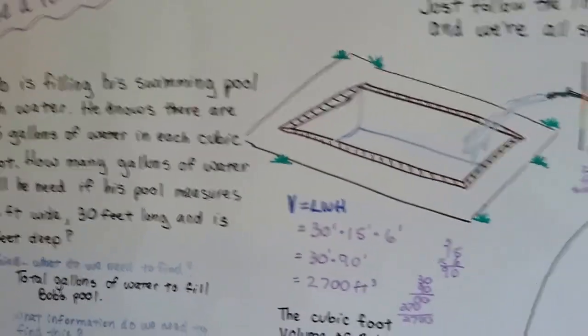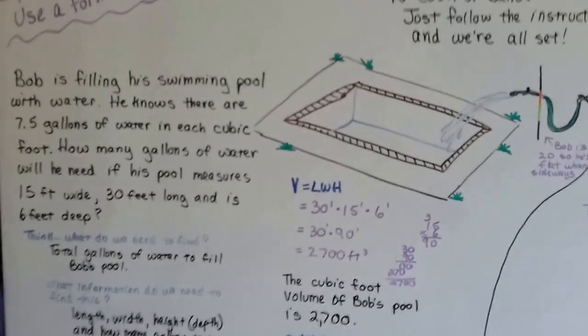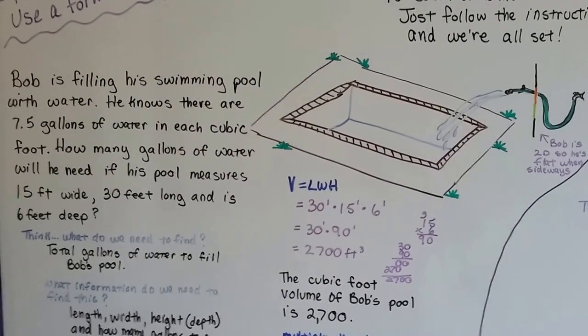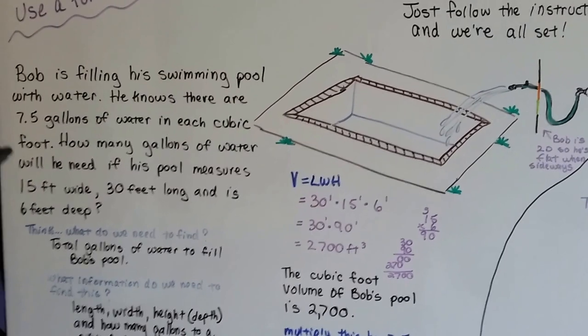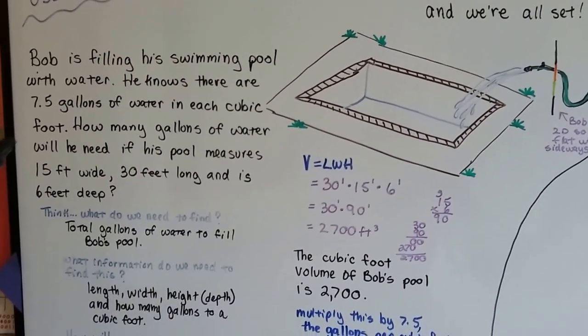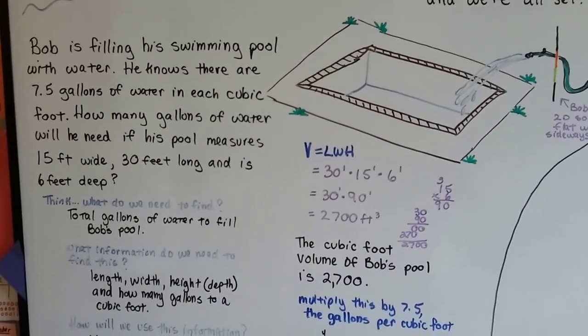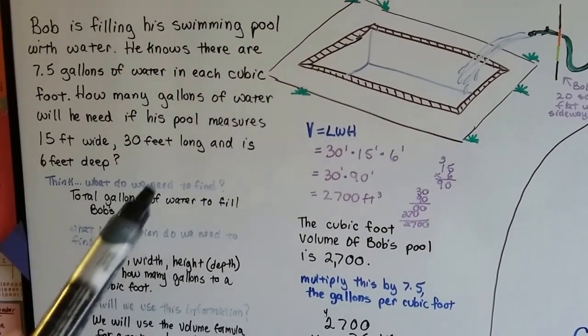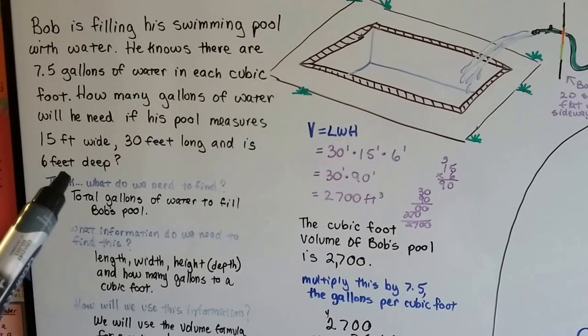So, let me show you here. I'll step back a little bit. That's Bob's swimming pool. He wants to fill it up for the summer. Bob is filling his swimming pool with water. He knows there's 7.5 gallons of water in each cubic foot. So how many gallons of water will he need if his pool measures 15 feet wide, 30 feet long, and is 6 feet deep?